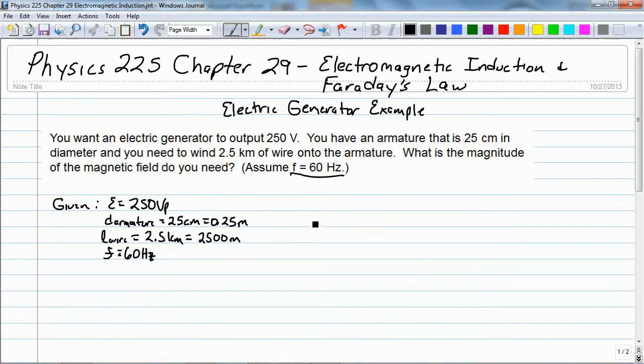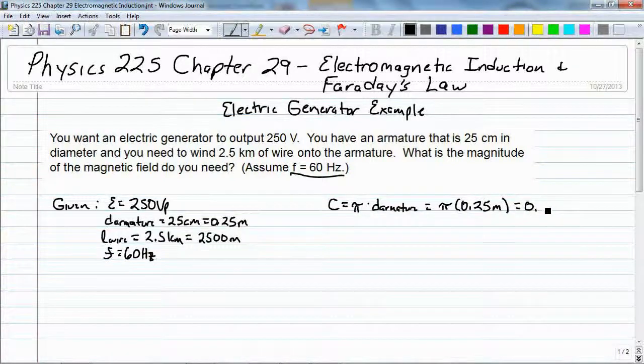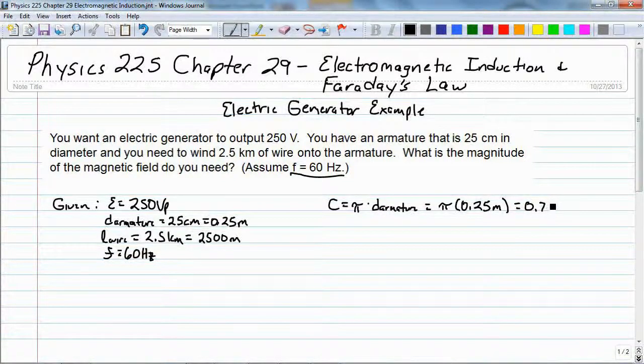So the first thing I need to find is the circumference of the armature, and that's just going to be pi times the diameter. And that's pi times 0.25 meters, and that gives me 0.785 meters.